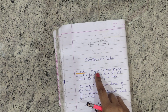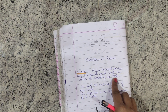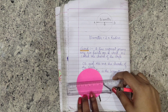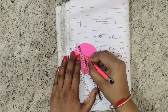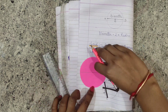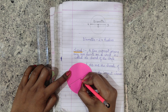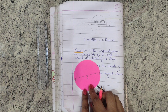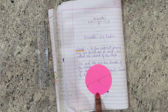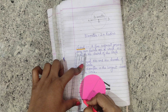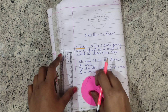Chord: A line segment joining any two points on a circle is called the chord of the circle. In this image, we can see AB passing through center O — it is the longest chord, also called the diameter. CD is another example of a chord.